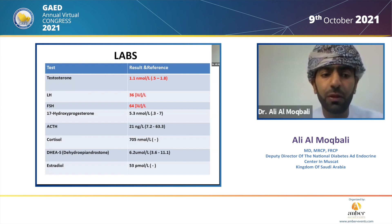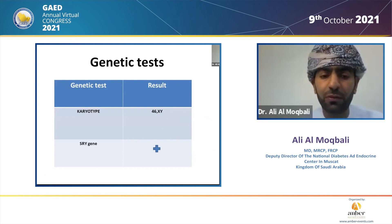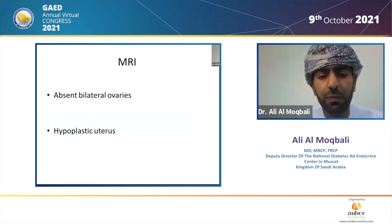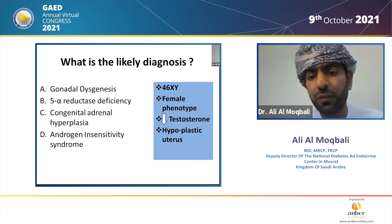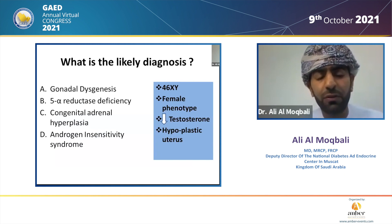Her hemoglobin is 13, potassium is 4.6, and her testosterone is normal for female reference. Her LH and FSH are high. She has normal cortisol, ACTH, and 17-hydroxyprogesterone. Her karyotype confirmed 46XY and the SRY gene is positive. The MRI showed a hypoplastic uterus and absent bilateral ovaries. We are dealing with a 46XY female phenotype, low testosterone, hypoplastic uterus — the question is: what is the likely diagnosis?